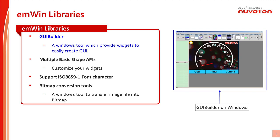Let's go to the details about the emWin library. The most important tool in emWin is GUI Builder, like the figure on the right side of this page. GUI Builder is a Windows tool which is a platform including many graphic widgets, and engineers could use these widgets to quickly build their GUI without writing a lot of code.